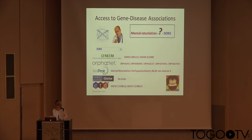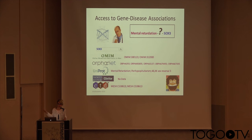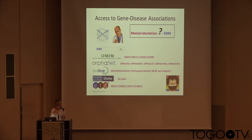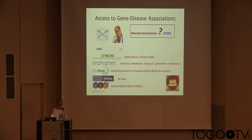How is the access to genotype-phenotype relationships in open biomedical research? The reality is that we have a lot of information, but it is distributed in different resources and different repositories. For example, if we query a gene, we get several diseases, but those diseases may not be the same across different repositories.